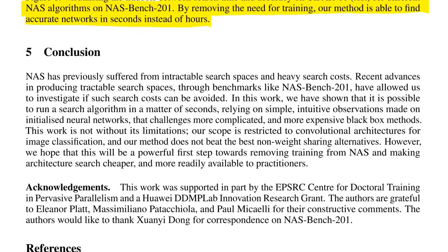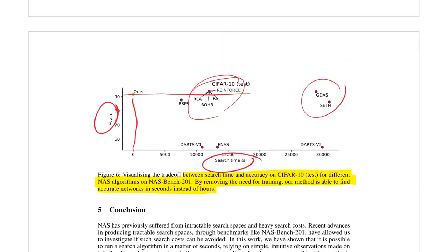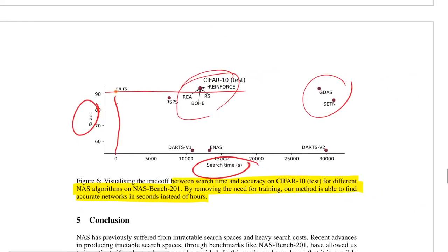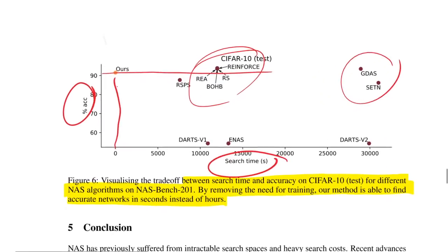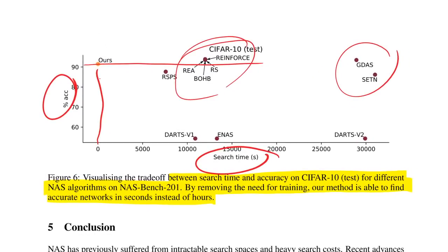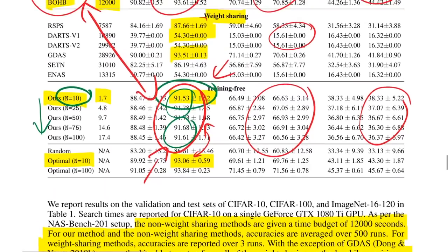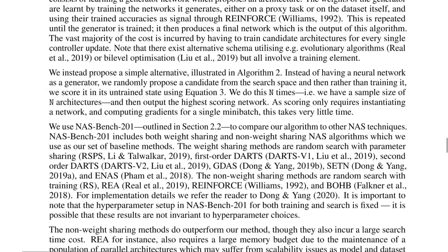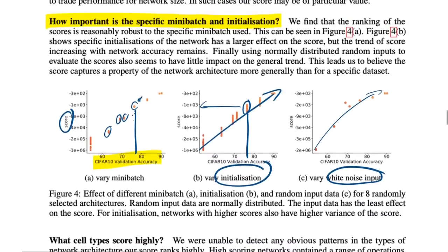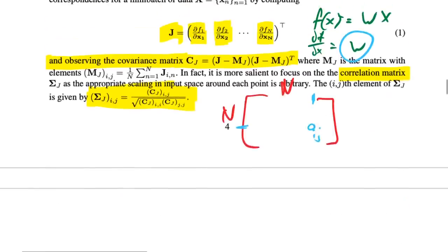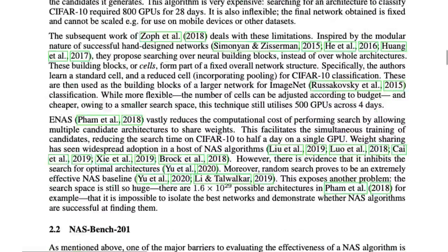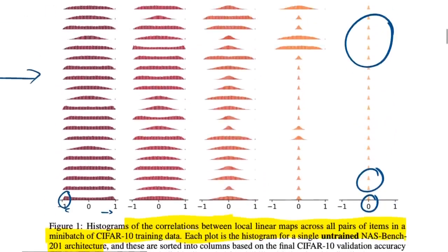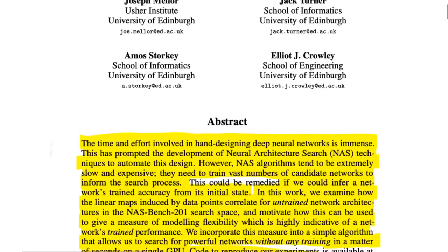They visualize the trade-off between search time and accuracy for CIFAR-10: all the good baseline methods are way out in terms of search time, while theirs is almost at zero while being quite close to the accuracy of the others. I think this is pretty valuable especially in a new domain — you can write a script that generates networks, run them through this algorithm, and quickly identify which ones are certainly not worth considering. Then select from the remaining and tweak manually.